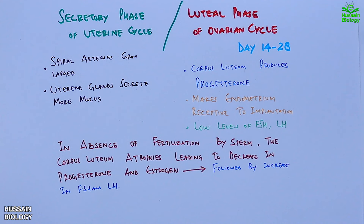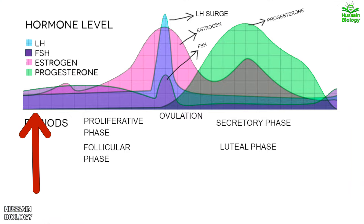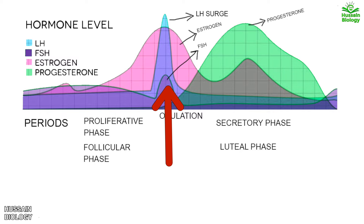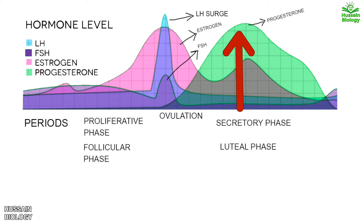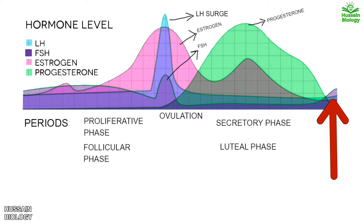The hormone levels throughout the cycle are shown in a diagram. At the start of the cycle, FSH, LH, estrogen, and progesterone are all at low levels. At ovulation, estrogen and LH peak, with FSH also making a small bump. Just after ovulation, FSH and LH fall considerably and estrogen drops slightly. Progesterone shoots up after ovulation and peaks at mid-luteal phase. At the end of the cycle, all hormones drop off to begin the next cycle if fertilization doesn't occur.